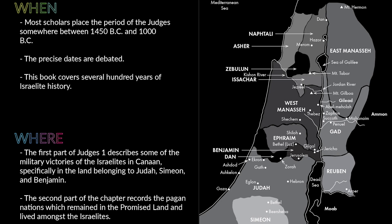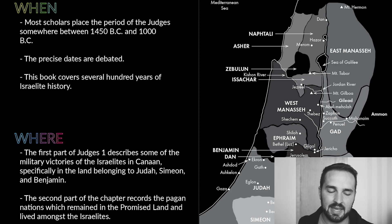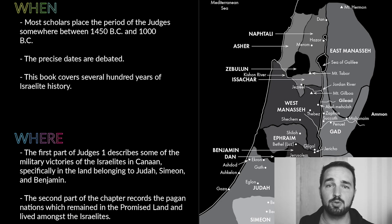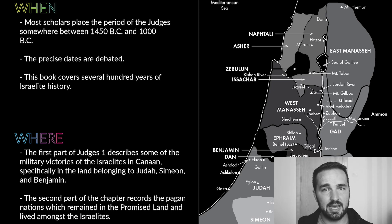Joshua was the one who led that conquest. The victories mentioned in this chapter were those in the lands of Judah, Simeon, and Benjamin. The second part of the chapter records the problem that is going to persist for the rest of this book — the pagan nations which remained in the promised land and lived among the Israelites. They were not supposed to leave any of those pagan nations living there, because God, Moses, and Joshua all warned they would have a negative influence. Well, they allowed them to stay.